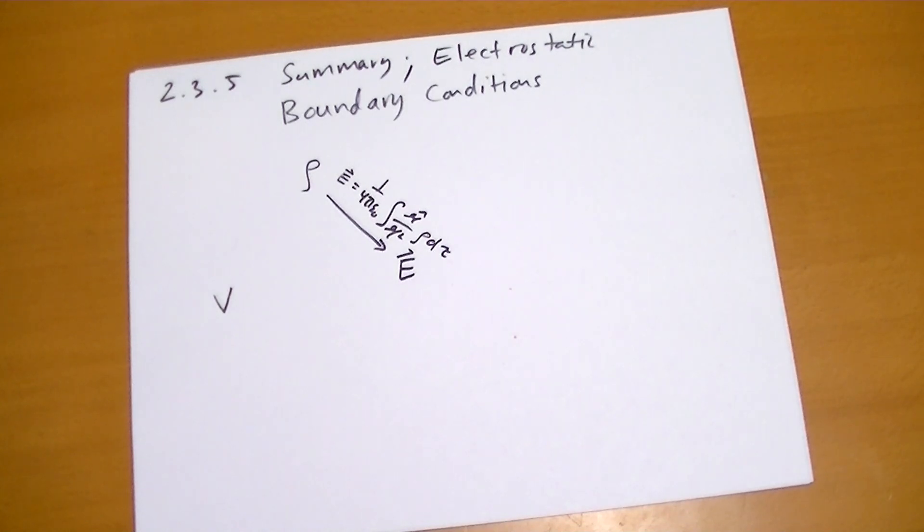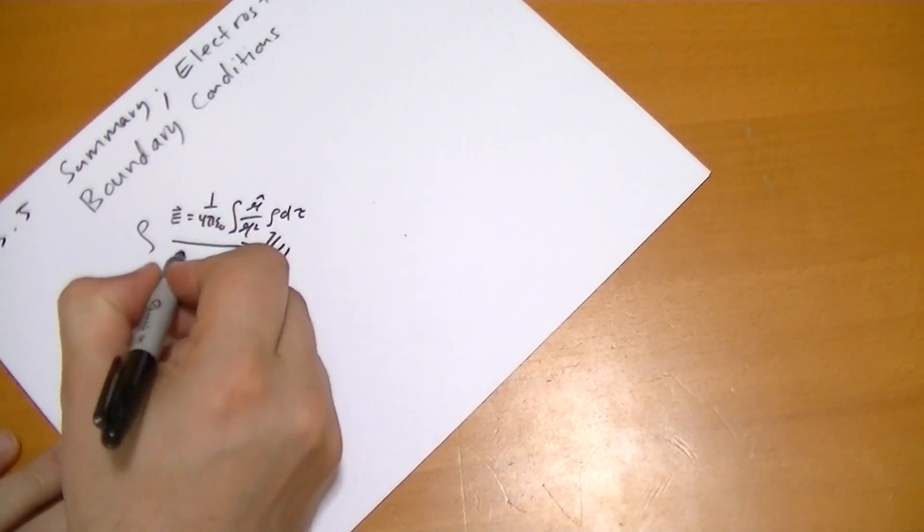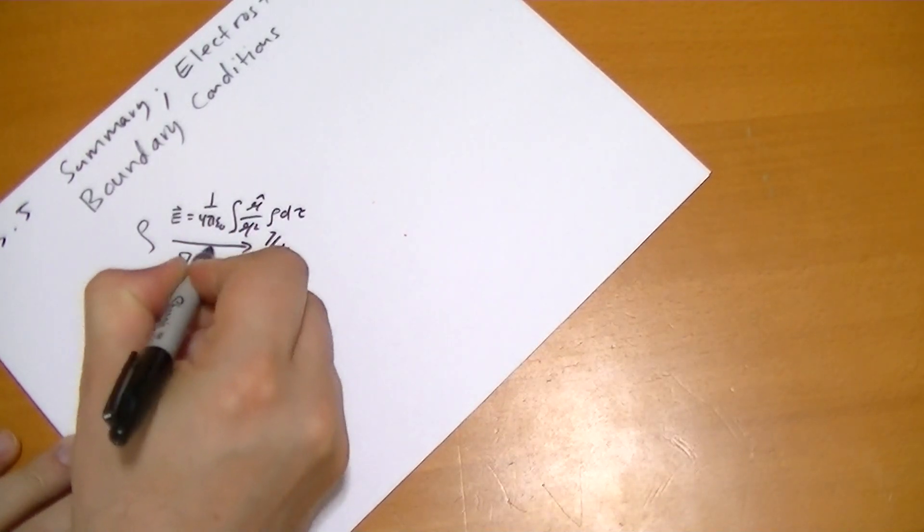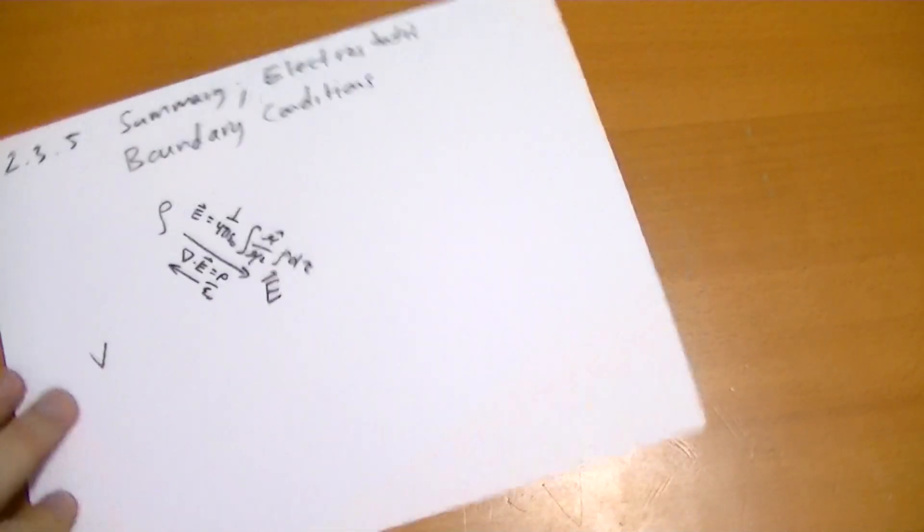And if you're given E and you want to find rho, then you use the simple equation, the divergence of E is equal to rho over epsilon naught. So that's how you go backwards.